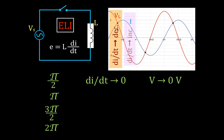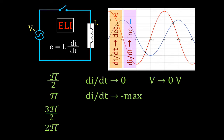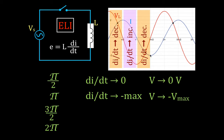For the next quarter cycle, from pi over 2 to pi: the current curve is getting steeper — the rate of change is increasing. Right where the current curve crosses the 0 line, it is at its maximum rate of change. The slope is negative, so we have a maximum but negative instantaneous voltage across the inductor. For the next quarter cycle, the current begins to decrease again — the slope returns to 0 — and that tells us the voltage also goes back to 0.